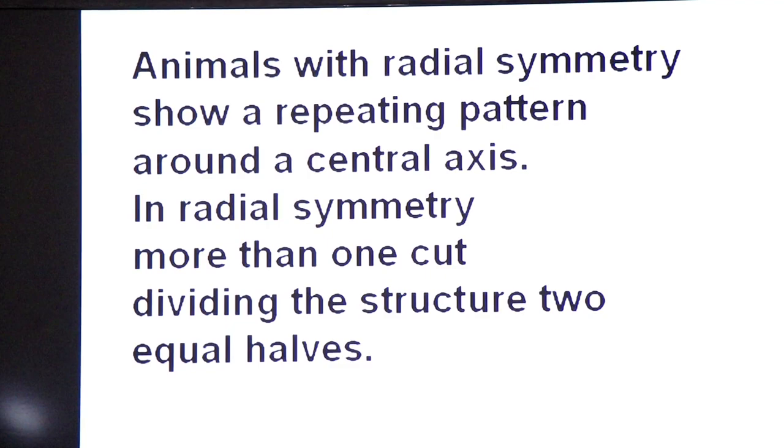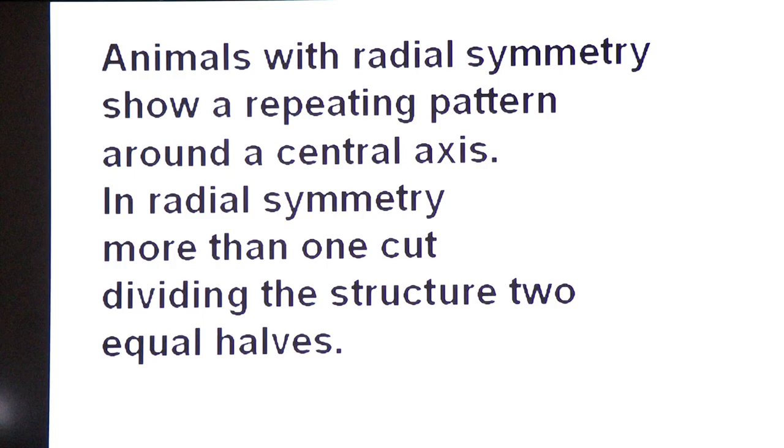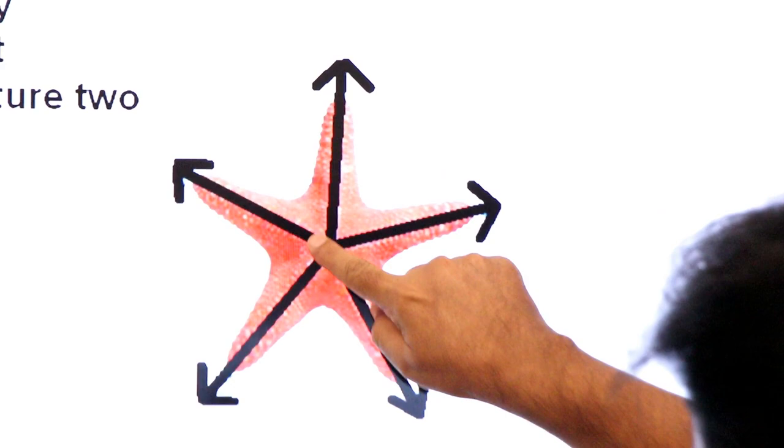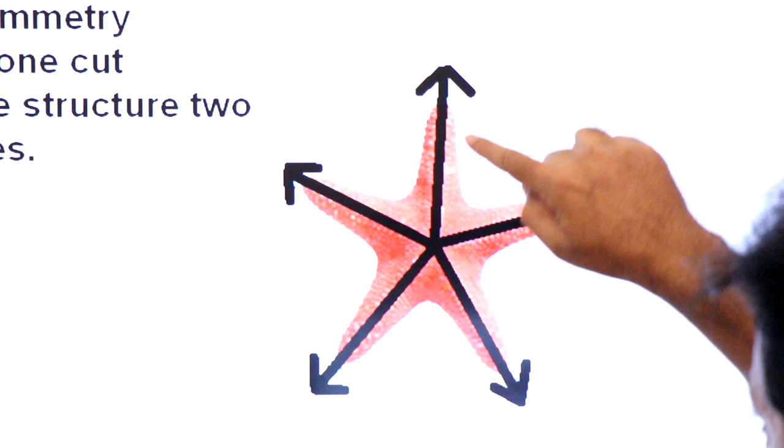Animals with radial symmetry show a repeating pattern around a central axis. In radial symmetry more than one cut dividing the structure into two equal halves. You will see starfish. This is starfish's diagram. This is central axis, and we will see starfish's body in imaginary lines. This is more than one cut.